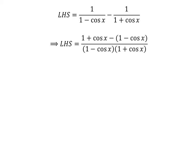Subtraction of the fractions gives us the left hand side equal to 1 plus cosine of x minus 1 minus cosine of x, all over 1 minus cosine of x times 1 plus cosine of x.